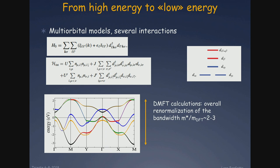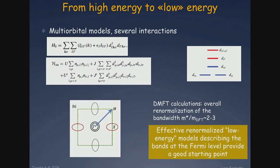The DFT calculations show that this picture works once you overall renormalize the bandwidth. You can just squeeze your bands and end up with a low energy model, which is the one I was showing before, with a renormalized effective mass, and this provides a good description of the Fermi-level physics.